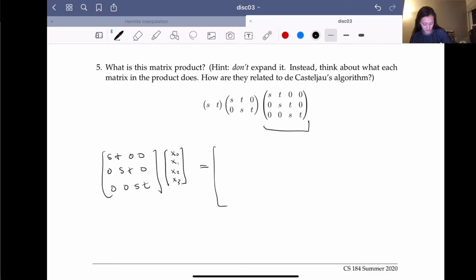So this will give us s*x0 + t*x1, s*x1 + t*x2. Is this looking familiar yet? Maybe?